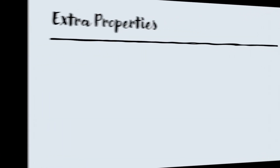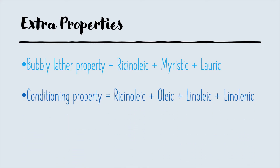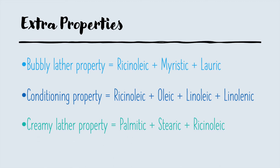Lastly, we're going to see some extra properties. First, we have the bubbly lather property, which is made with ricinoleic, myristic, and lauric. Then the conditioning property, which is made with ricinoleic, oleic, linoleic, and linolenic. And lastly, we have the creamy lather property, made from palmitic, stearic, and ricinoleic.